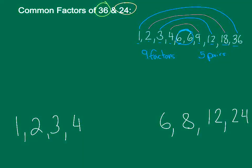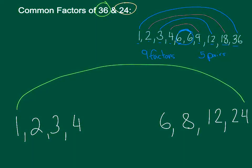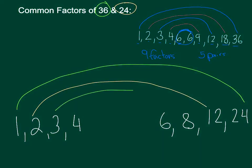So now let's create our little rainbow here. 1 is a pair with 24. 2 is a pair with 12. 3 is a pair with 8. 4 is a pair with 6.